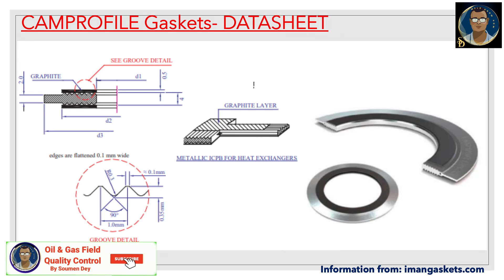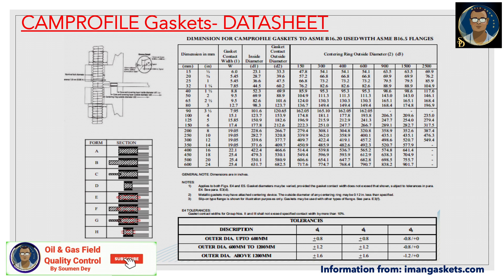Here is the data sheet for your reference. You can check the dimensions for verification during material receiving, or check appropriateness for your requirements. There is also a dimension table for cam profile gaskets to ASME B16.20, used with ASME B16.5 flanges. The cross-sectional views A through H correspond to the different forms of gaskets we discussed. Sizes are available from 1/2 inch up to 24 inch and larger diameters, with tolerances specified.